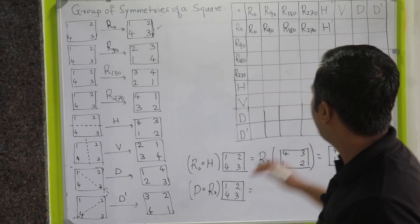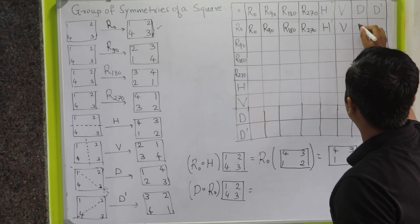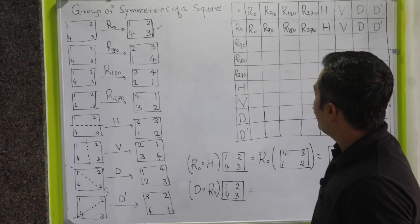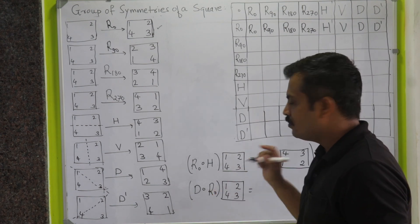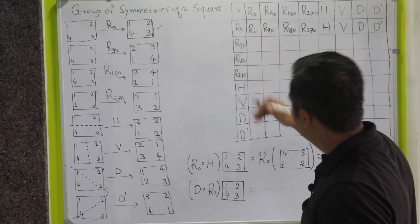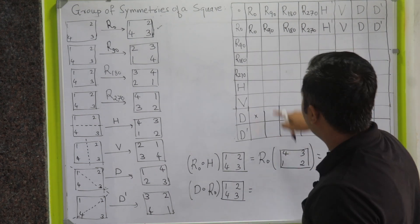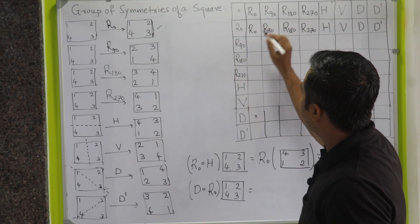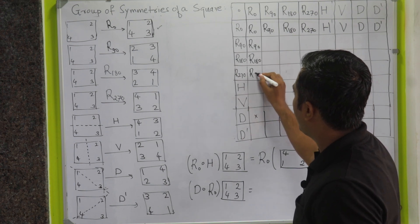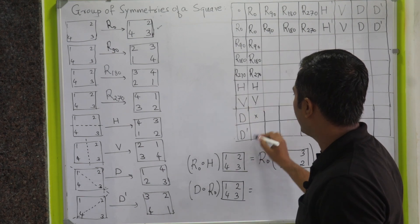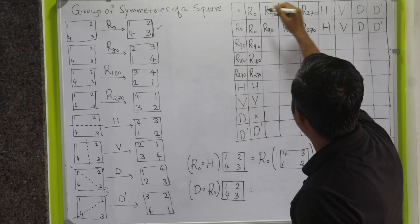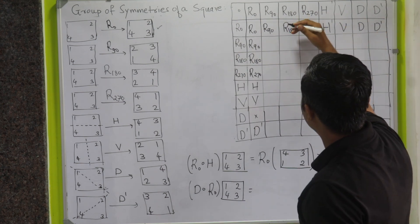By doing the remaining calculations in the first row, we get V, D, and D′. Notice that the first column — R0 composed with each element — simply repeats that element, and the first row behaves the same way. For example, R90 ∘ R0 = R90, R180 ∘ R0 = R180, R270 ∘ R0 = R270, H ∘ R0 = H, V ∘ R0 = V, and D ∘ R0 = D′.